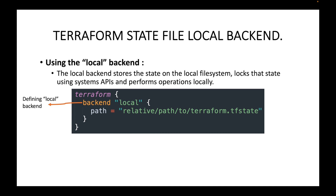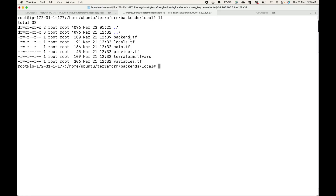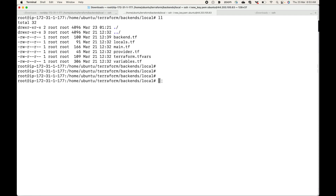The advantage of defining this local backend explicitly is that you can define a custom path where you want to store the Terraform state file. By default Terraform will store the state file in the same location where your configuration files are. For example, if I have my configuration here and I run the terraform apply command, the state file will also get created in the same directory.